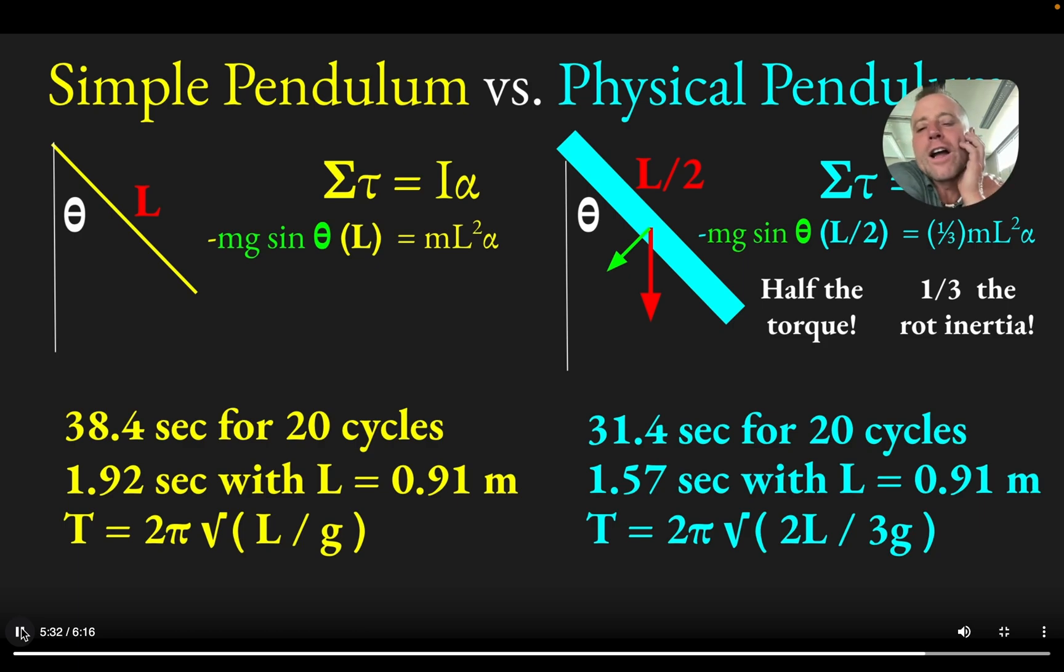Just for fun, I put this data back into the two relationships just to see what value I could get for G from like a one data point experiment. And when you put that value of the period 1.92 seconds with L equal 0.91 meters, well, you get G equals 9.71 meter per second squared. So near, you know, about a 1% error from the experimental value of say 9.81.